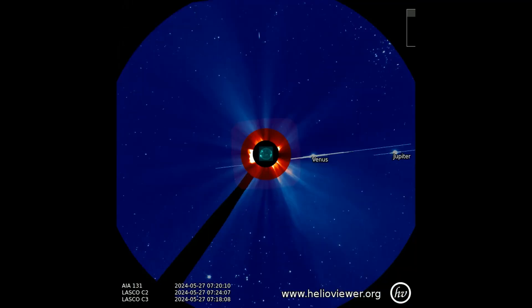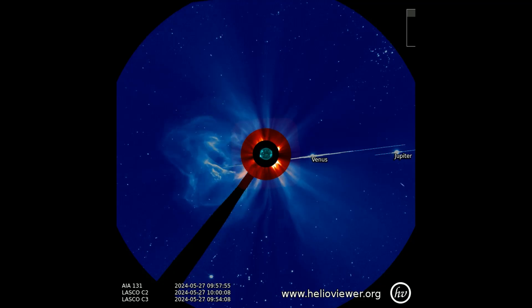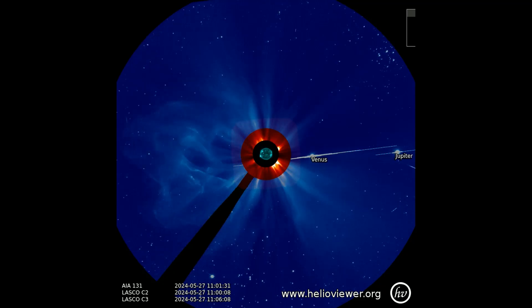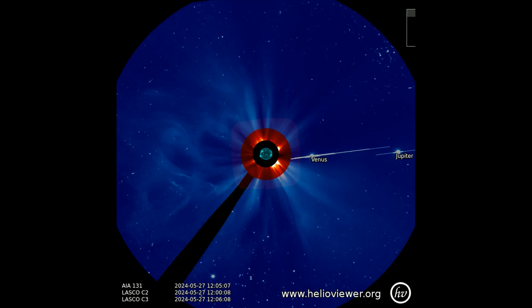Venus and Jupiter can be seen making a cameo appearance as the CME blasts off the eastern limb of the Sun, outward through space, and behind Earth's orbit. Observed with the Lascaux C3 filter added.